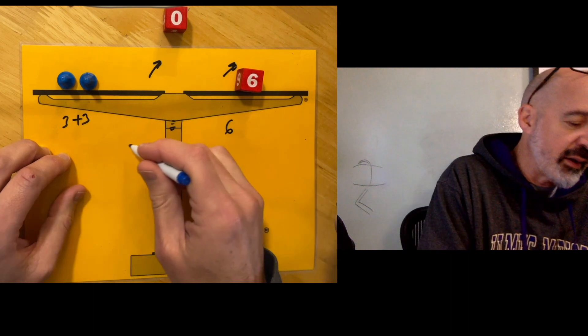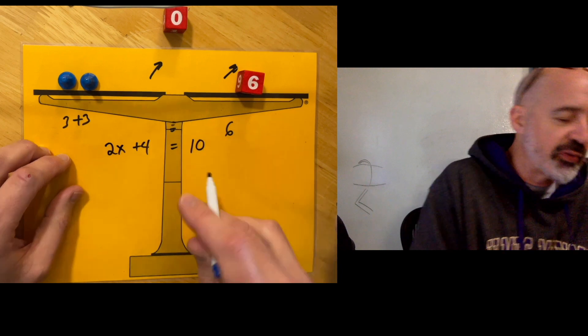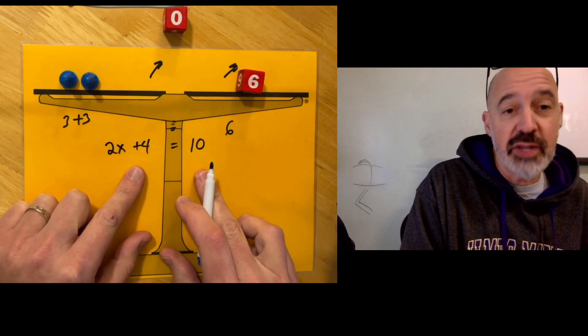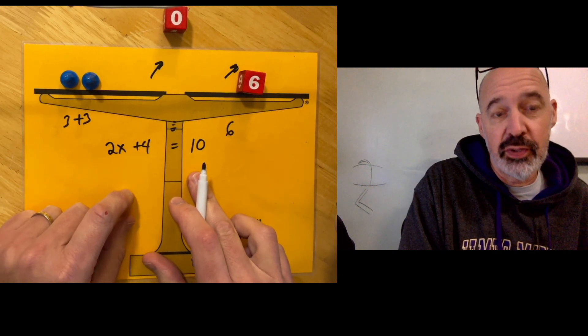And again this started out as 2x plus 4 equals 10. So this is like a two-step equation from the onset. And you might think that an eight-year-old would have a hard time with that. And they would. Except I think that the pawns and the dice really help.